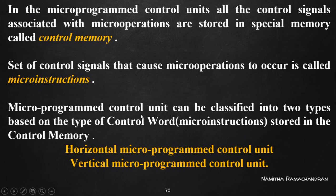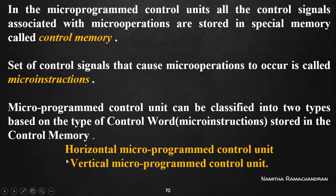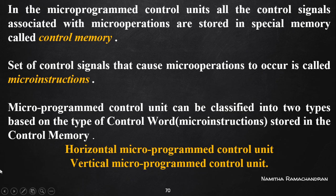In a micro program based control unit, we can classify the control unit based on the type of instruction present in our control memory. We have two different types of micro instructions: horizontal micro instructions and vertical micro instructions. If we use horizontal micro instructions, such a control unit is called a horizontal micro program control unit; if vertical, it is called a vertical micro program control unit.